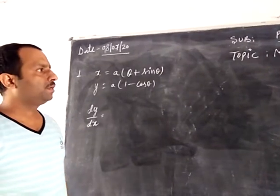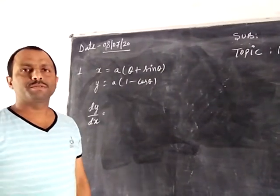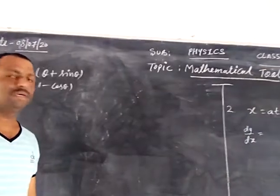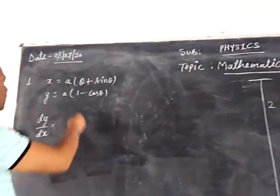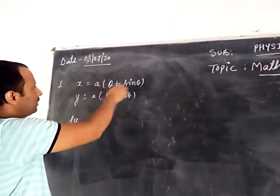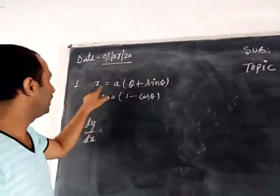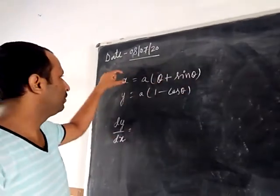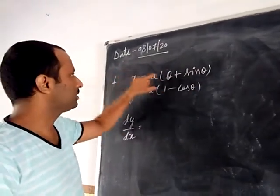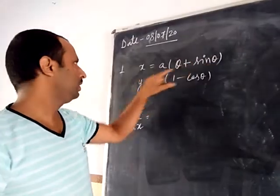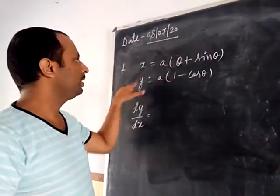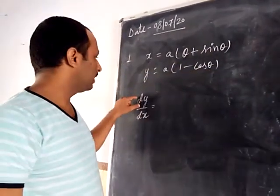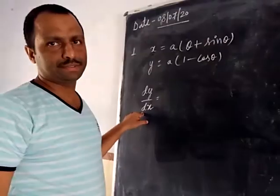Hello students. Now we will practice some of the problems based on differentiation. See here, x is dependent upon theta. x is equal to a(theta + sin theta), so the value of x is dependent upon theta. Here y is also dependent upon theta. The question is that we have to find out dy by dx.